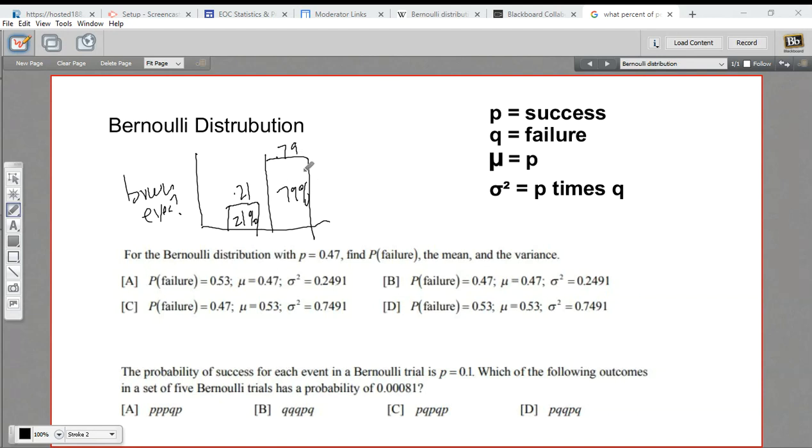The success case, we call a specific variable. We call that p. And the failure, we call q. We also give these two things values. The p has a value of 1, and the q has a value of 0.